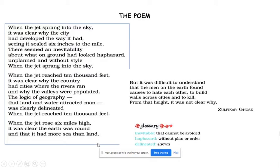In the third paragraph: 'When the jet rose six miles high, it was clear the earth was round, and that it had more sea than land.' When the jet rose farther to six miles high, one could see a half-rounded structure of the earth. As it moved higher and higher, land appears very less and the water body is more. This vision is not often available — only if traveling abroad on a clear sky over a long distance might you see so much sea.